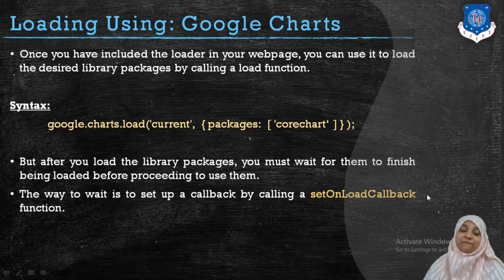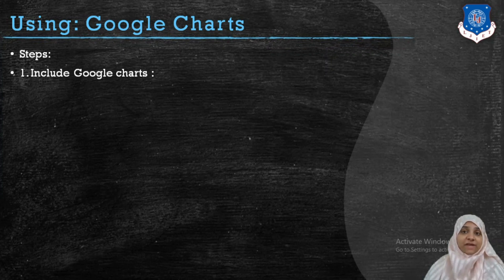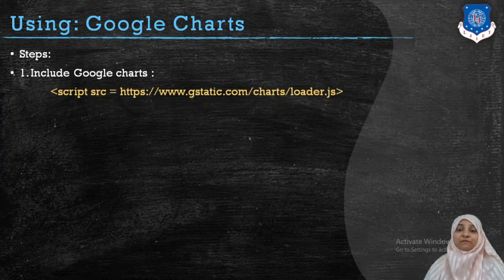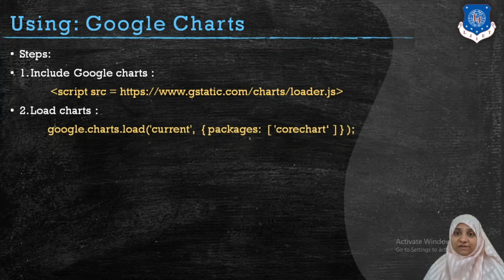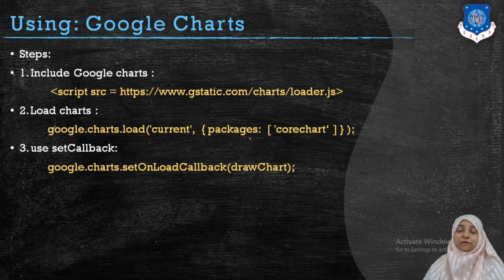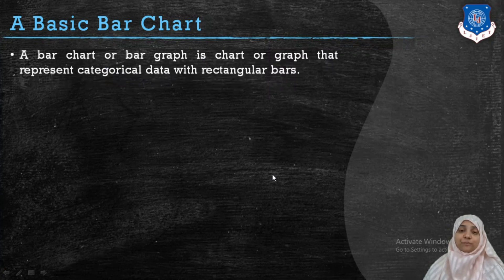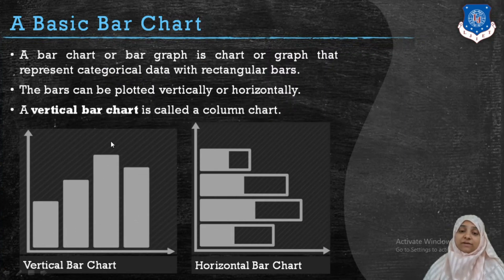We always want the corechart package to be loaded first, and then we execute code to draw a particular chart. That is done by setting up a callback — the callback name is setOnLoadCallback with camel notation. To summarize: step one is to include Google Charts with a script tag; step two is to load the package using google.charts.load; step three is to set a callback using google.charts.setOnLoadCallback, naming the function — drawChart — in which you supply the data and call the draw method.